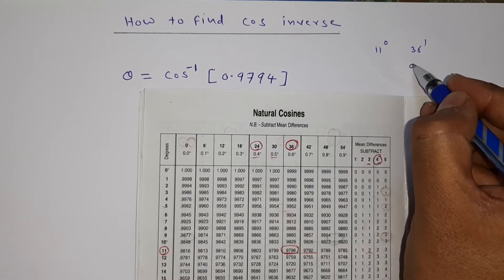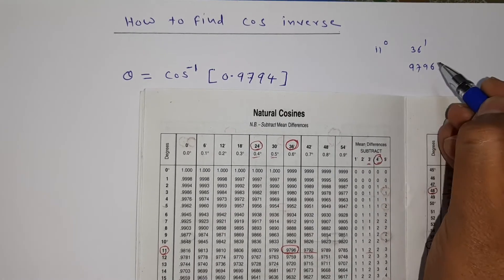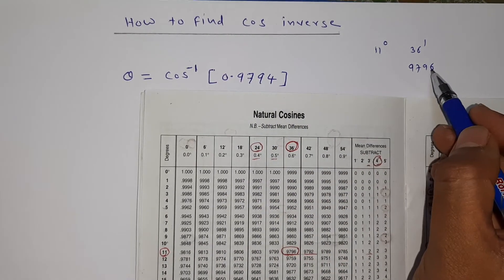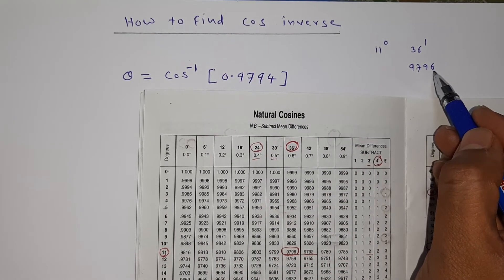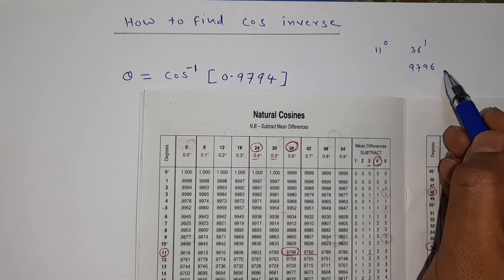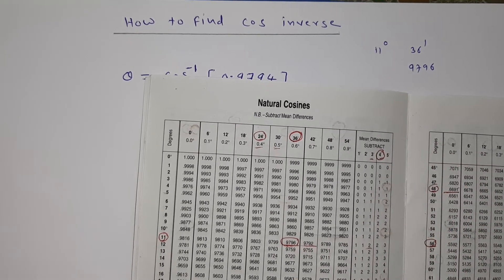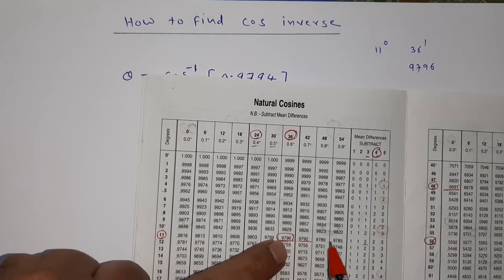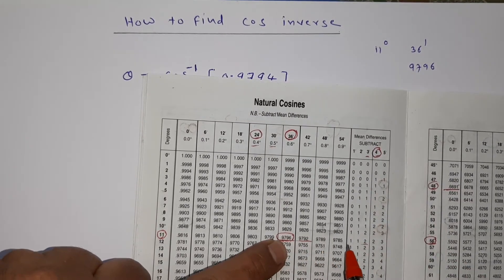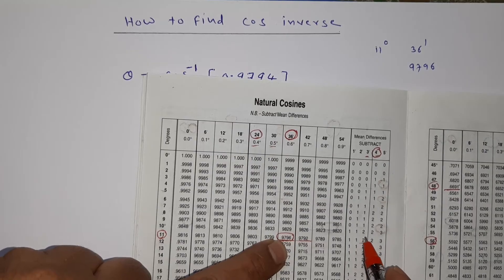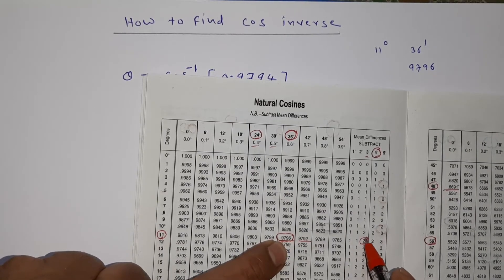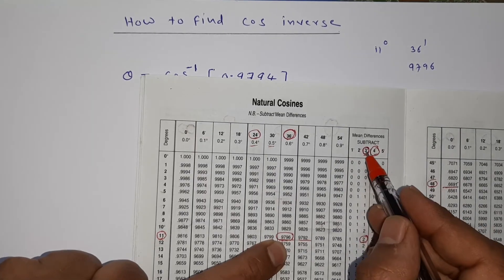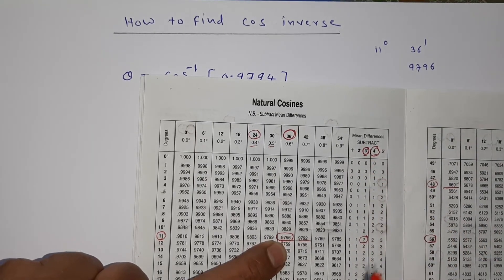In 11 degrees, 36 minutes we got 9796, and our value is 9794. That means two babies are there, so we have to subtract from mean difference. So in mean difference, let us say in 11 degrees 9796 will go here. We are getting 2, 1, 1, 2.